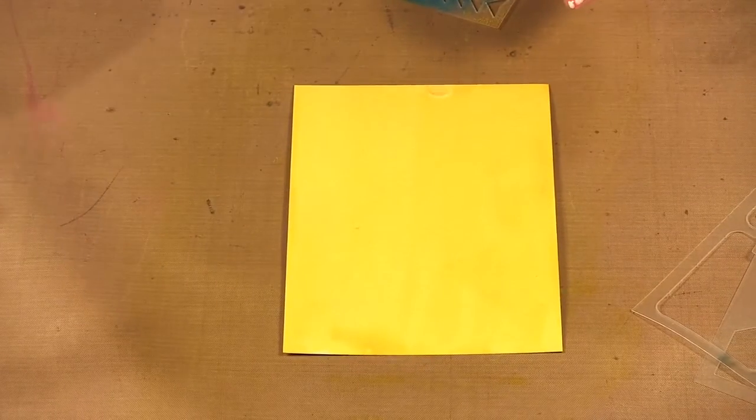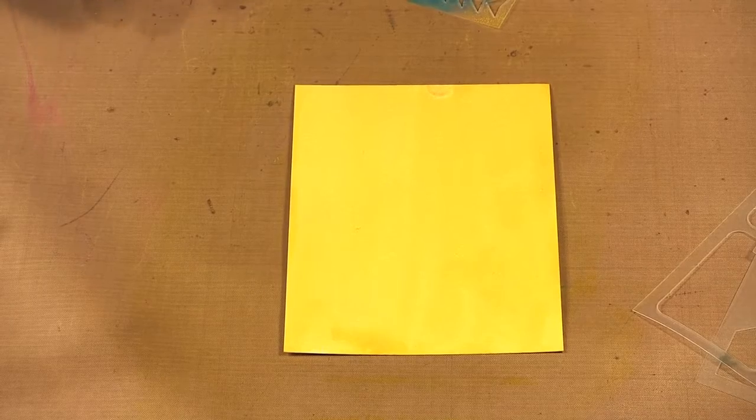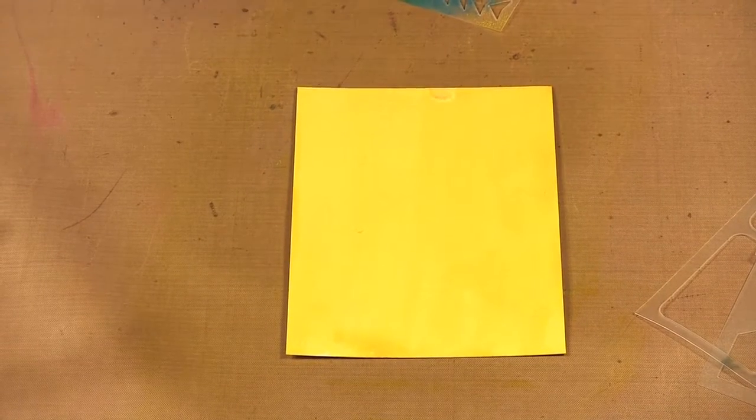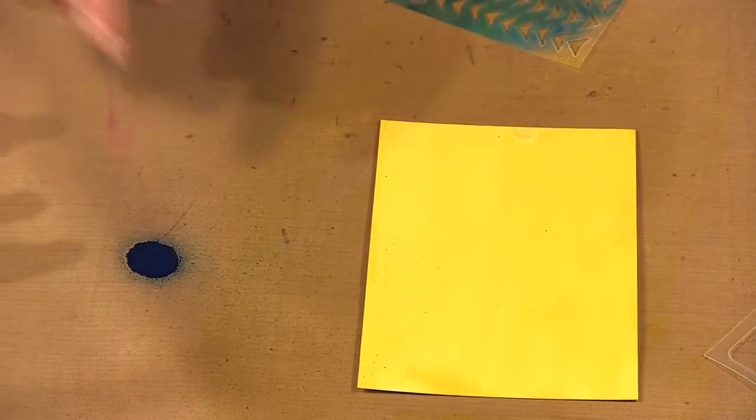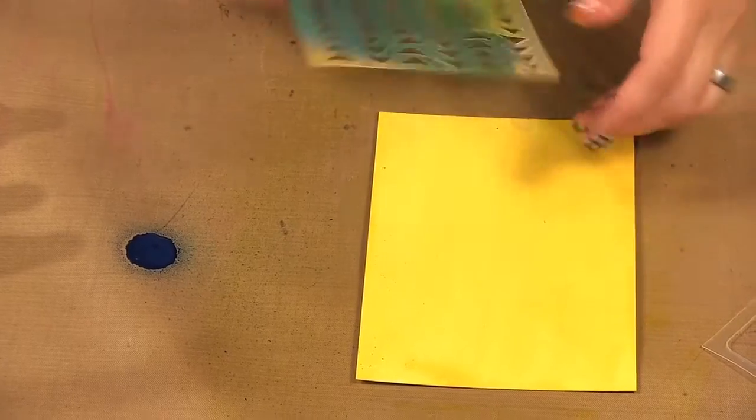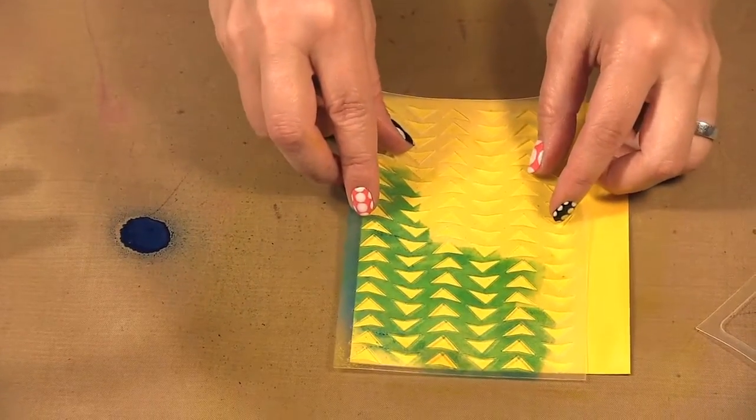So now I want to use one of the stencils, this one here. But because they are so pigmented I don't want to just spray it on. So what I do, maybe I'll use Ocean, is I will spray some on the table. And you can see how dark that is. I did get some on my card but that's okay.